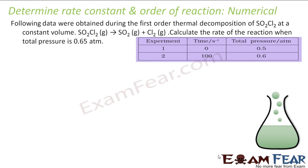We have data for thermal decomposition of SO2Cl2. We have to find the rate of the reaction when the total pressure is 0.65 atm. Note that we don't have to find the rate constant — we have to find the whole rate of the reaction. The total pressure is given and this is a first-order reaction.